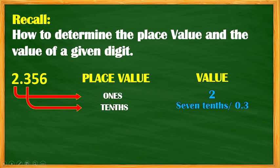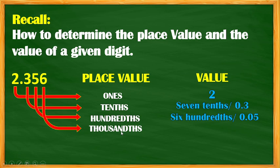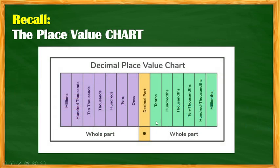We have 5 in the hundredths place — this would be read as 5 hundredths. Next, we have 6 — thousandths is the place value, so we have 6 thousandths. Now, let's recall the place value chart.